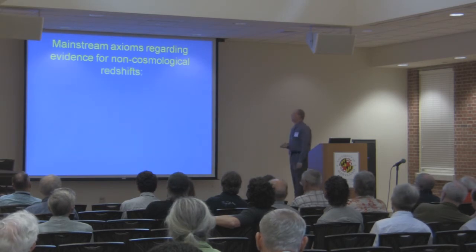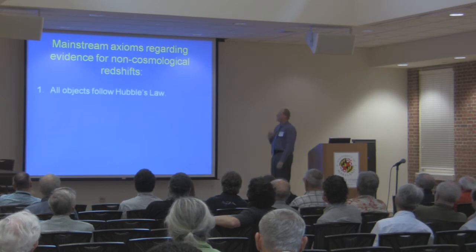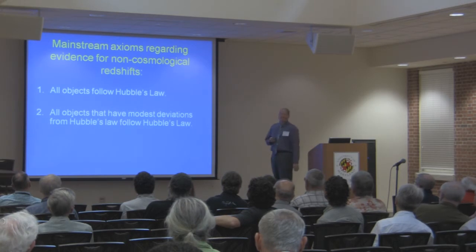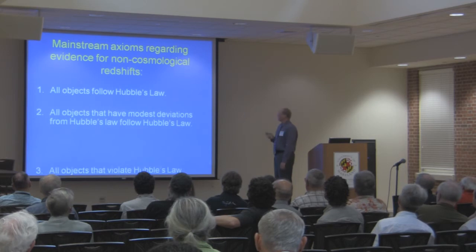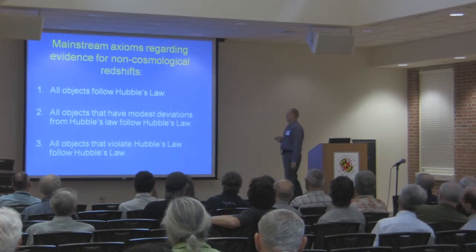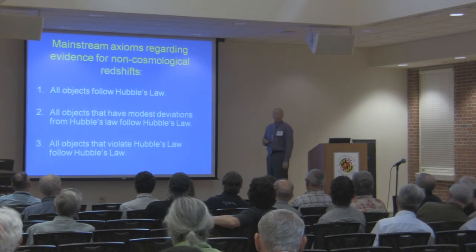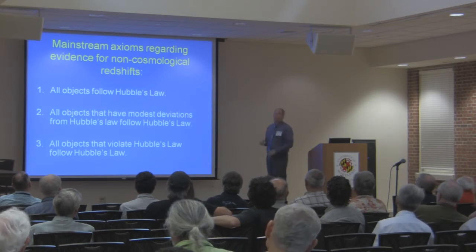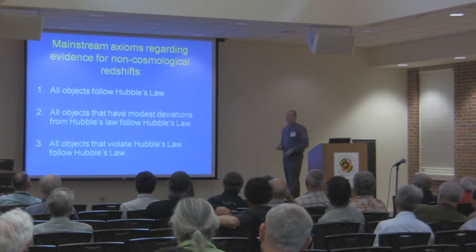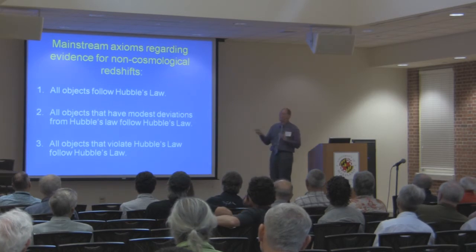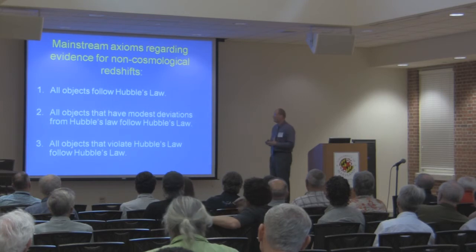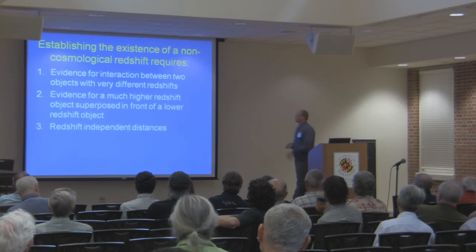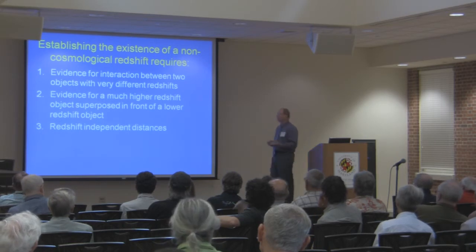The mainstream axioms regarding evidence for non-cosmological redshifts: Axiom 1 — all objects follow Hubble's law. Axiom 2 — objects with modest deviations from Hubble's law follow Hubble's law due to peculiar motions. Axiom 3 — all objects that violate Hubble's law are explained by statistical chance alignments of foreground and background objects. They basically deny that there could be any actual deviations from Hubble's law. Establishing evidence therefore requires more than just statistics and chance alignments — for example, finding evidence for interaction between two objects with very different redshifts, or finding higher-redshift objects projected in front of lower-redshift objects.